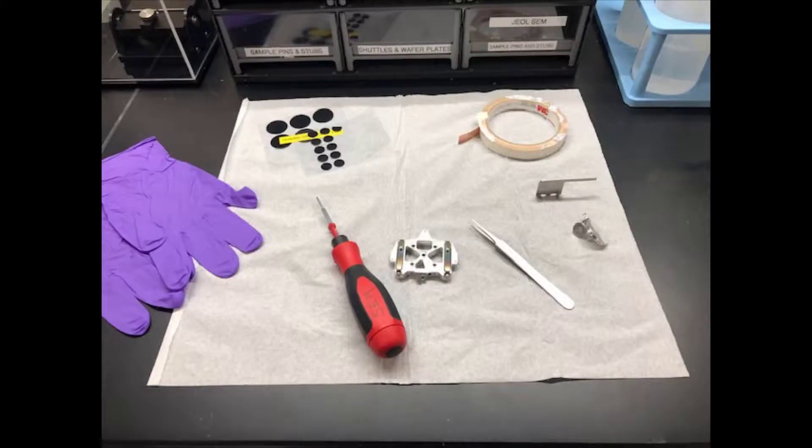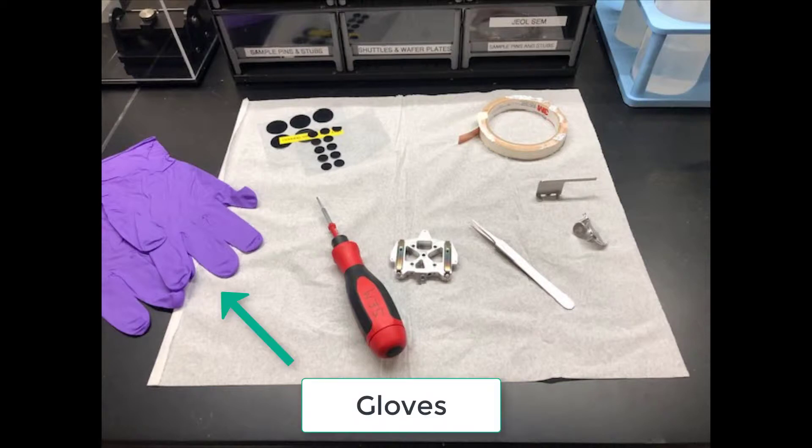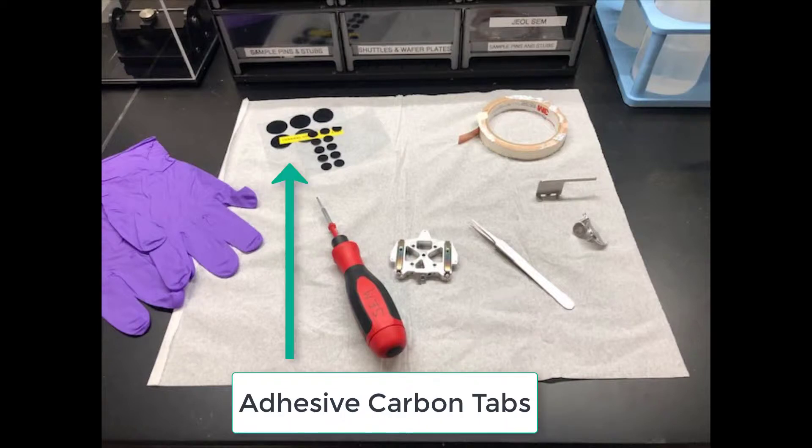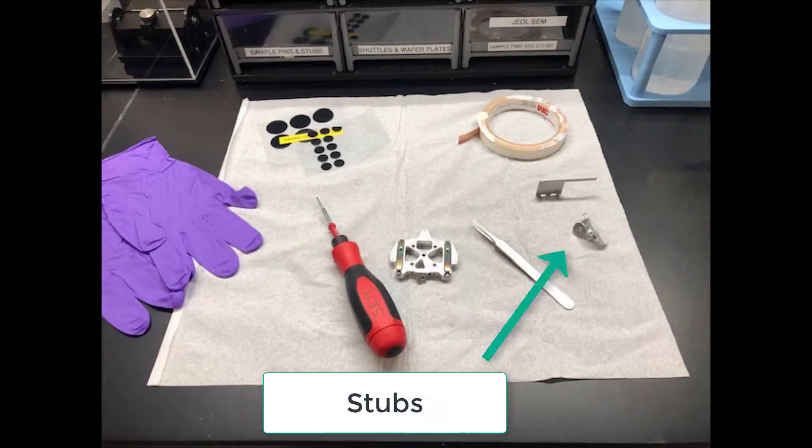Before we begin, let's review the tools needed for sample preparation. You will need to wear gloves any time you are handling the shuttle or doing sample preparation. You will need a screwdriver, tweezers, adhesive carbon tabs or two-sided copper tape, and stubs to affix your sample to.